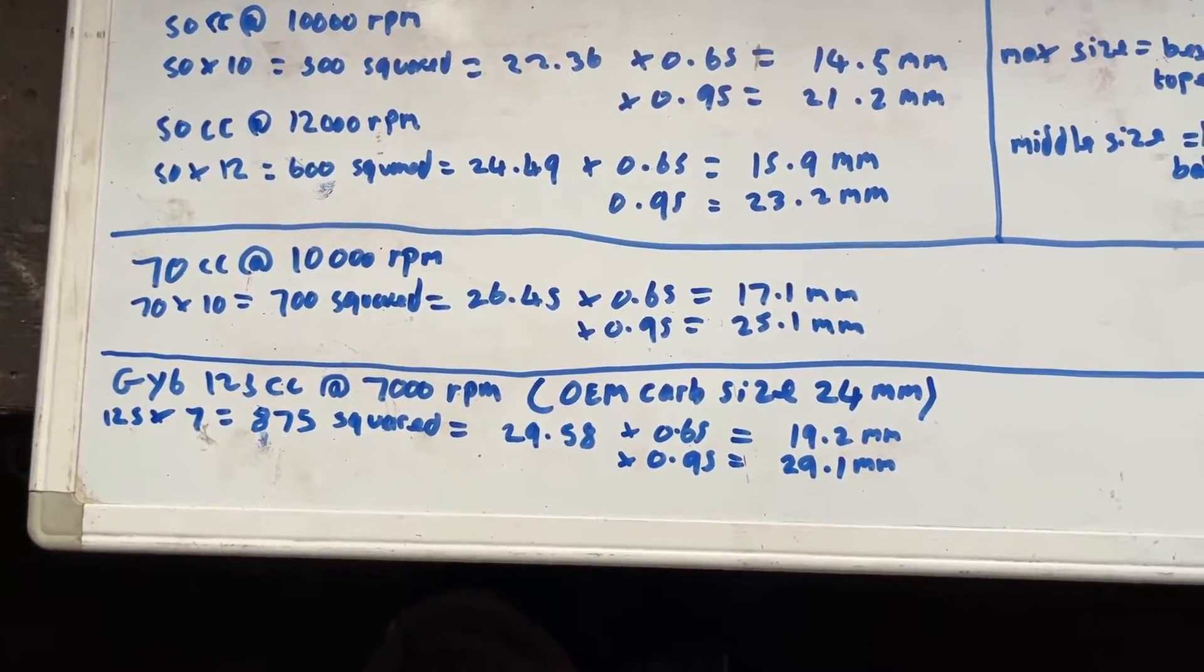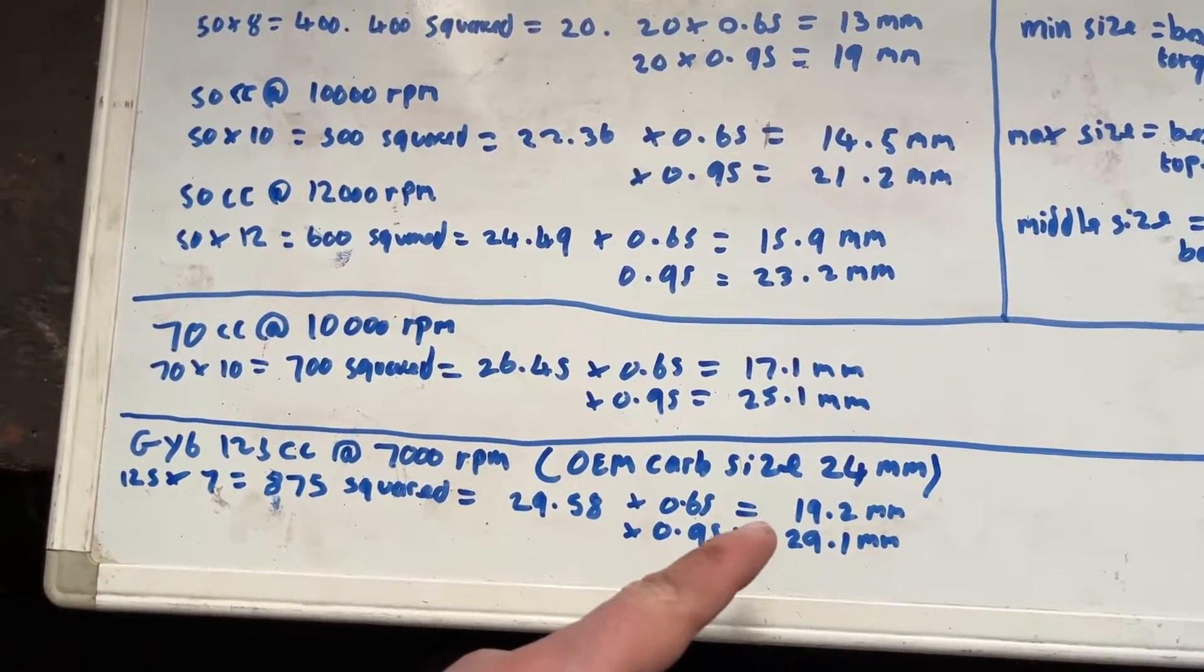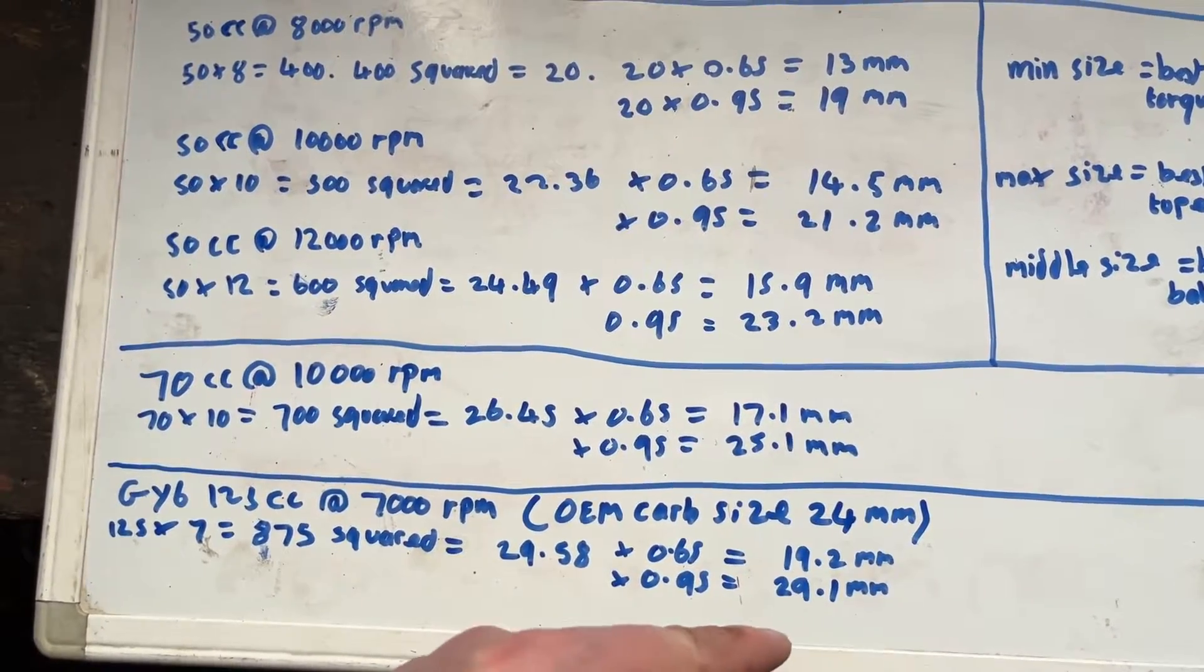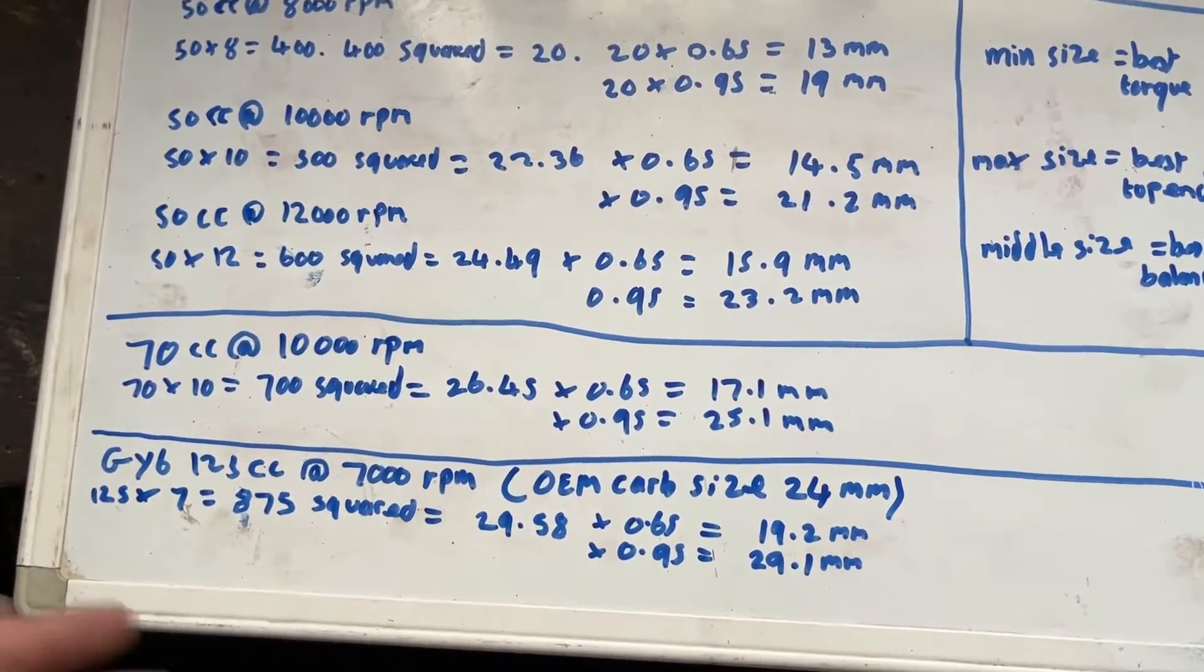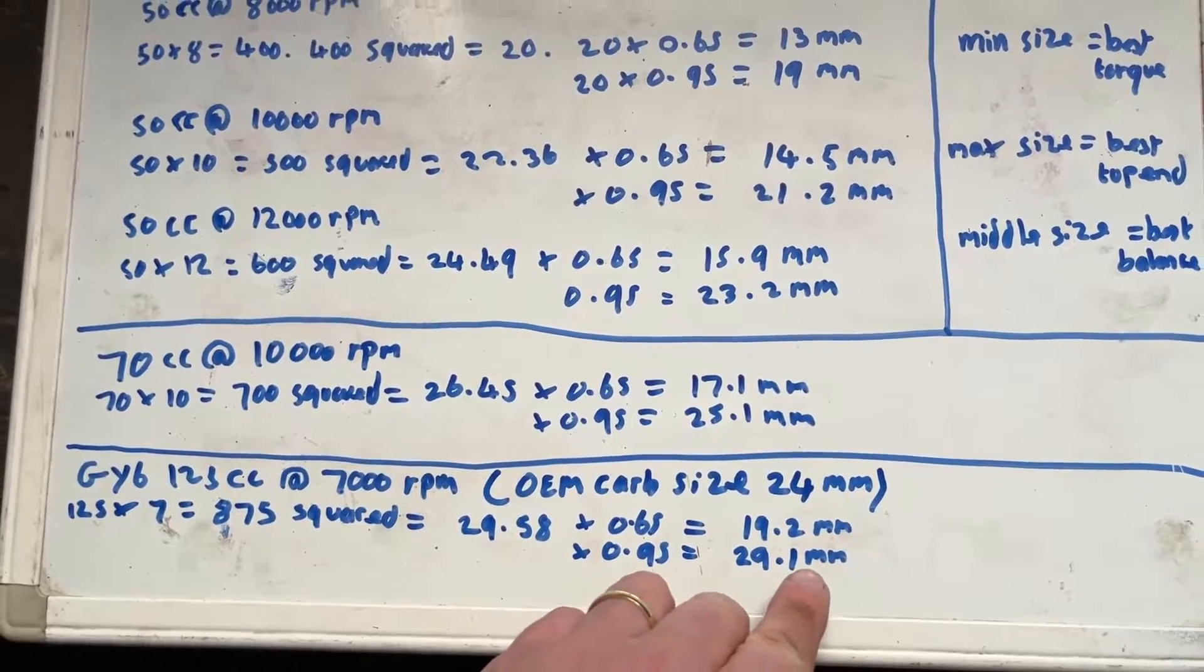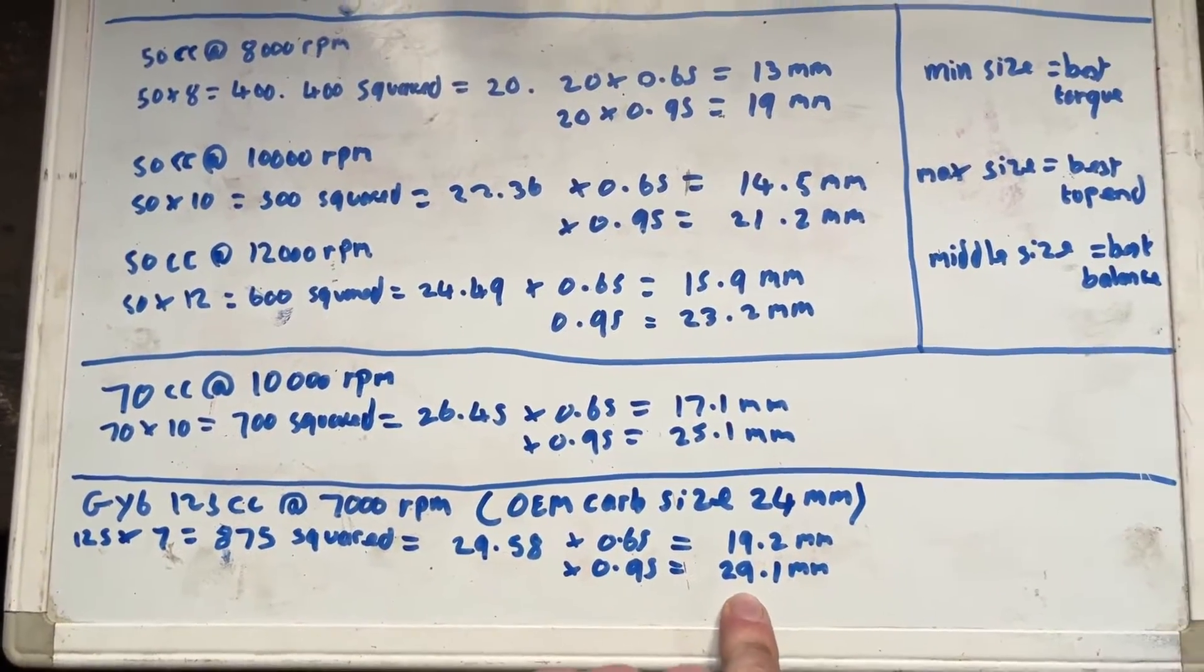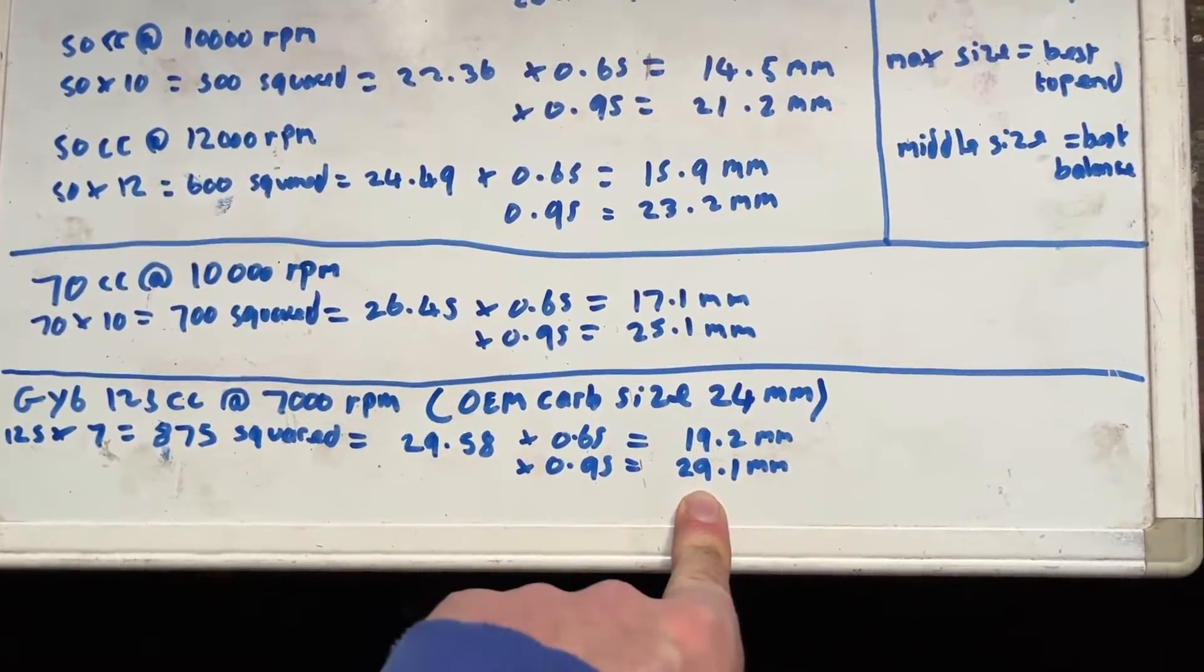But for example, if you have this engine and you wanted to have slightly better torque, you might consider dropping down to a 19. Or if you wanted better top end, you might consider going up to, well, it's 29.1 is what the calculation is saying. You would still be safe going up to a 30 millimeter.